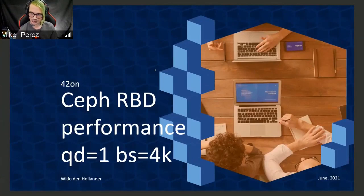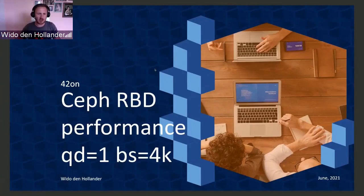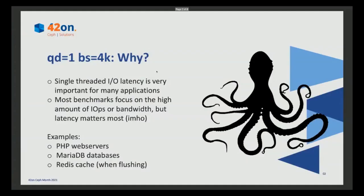I'll keep it brief because this is a lightning talk about RBD performance with a Q-depth of 1 and a block size of 4K. You might be asking yourself: why Q-depth of 1 and 4K block size? From my experience, single-thread I/O latency is very important for many applications.